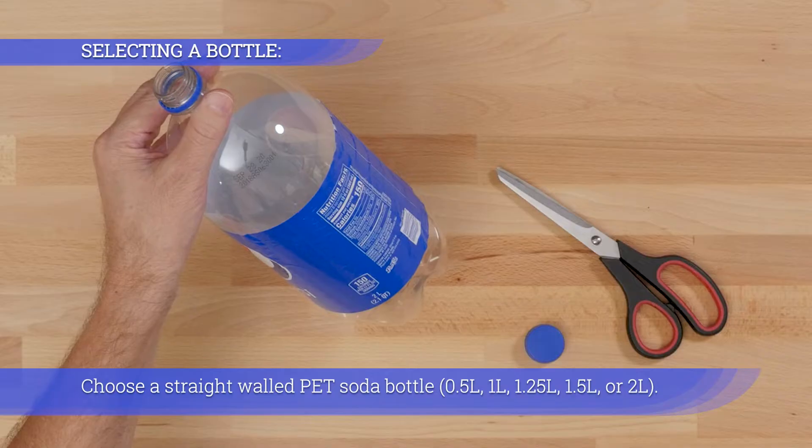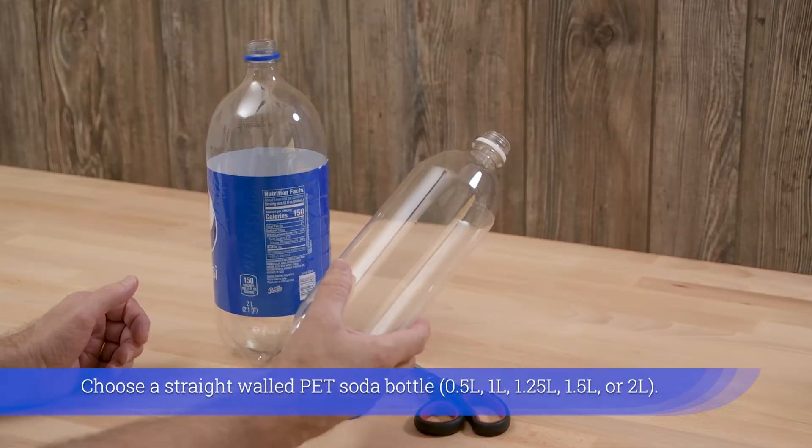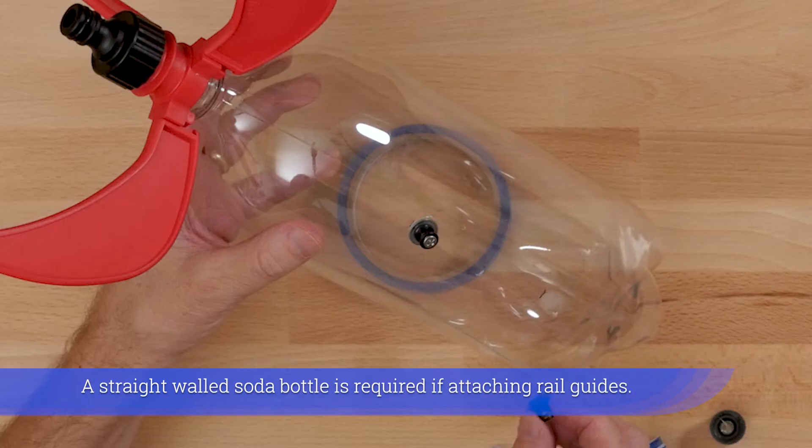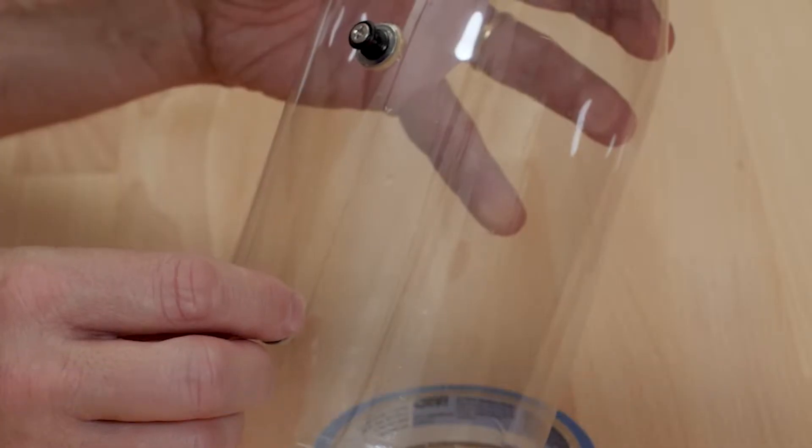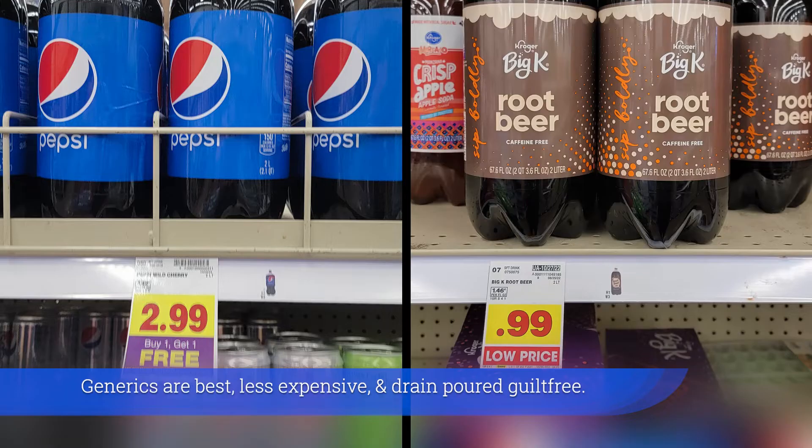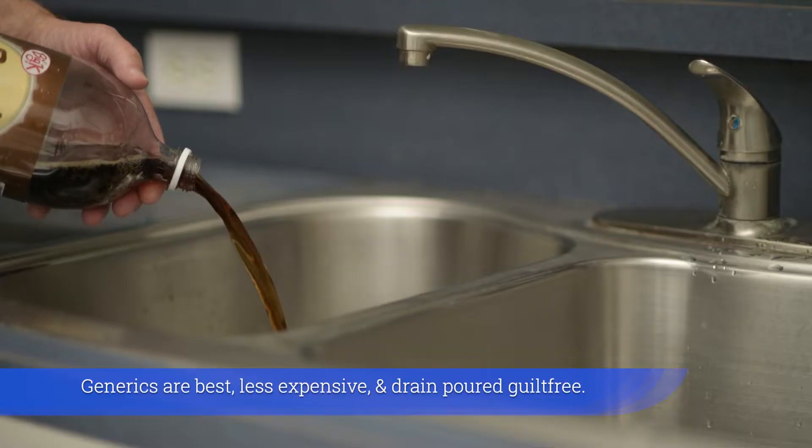Choose a straight-walled PET soda bottle. A straight-walled soda bottle is required if attaching rail guides. Generics are best, less expensive, and drain poured guilt-free.